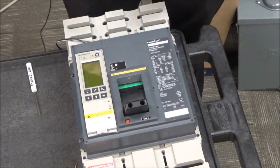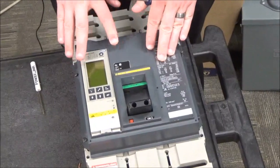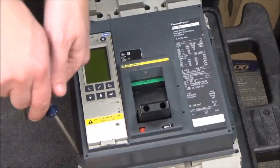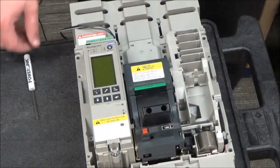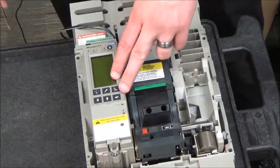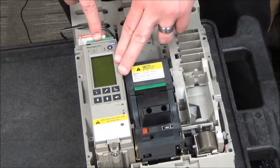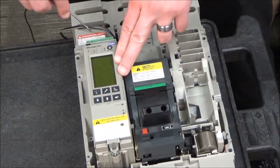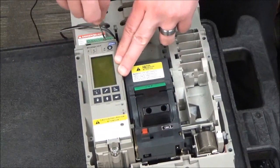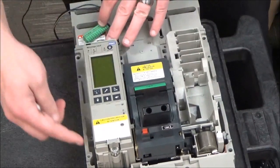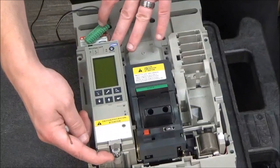You'll start by removing the accessory cover on the breaker. Then you'll remove the trip unit by taking out the green Phoenix connector and loosening these two captive screws.